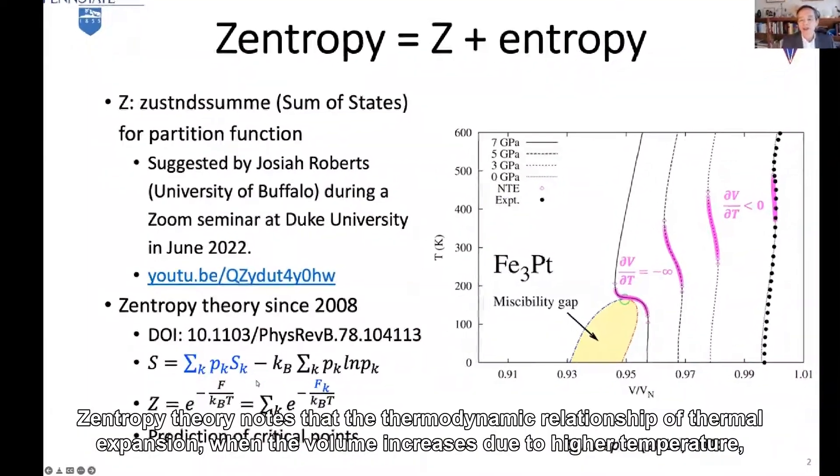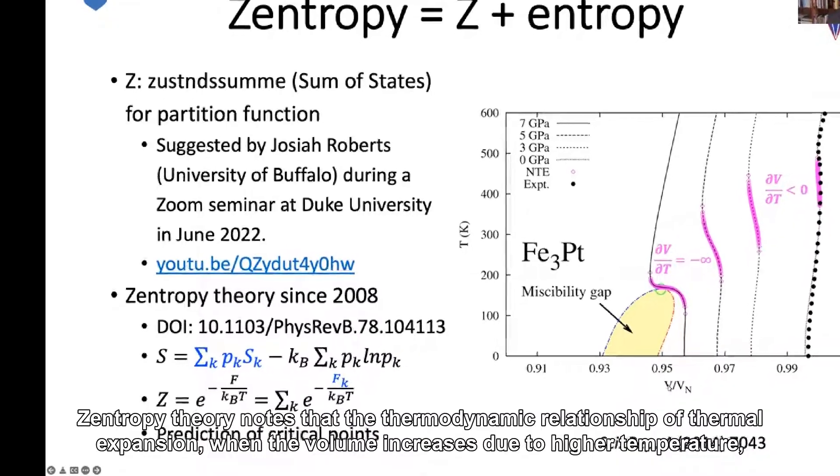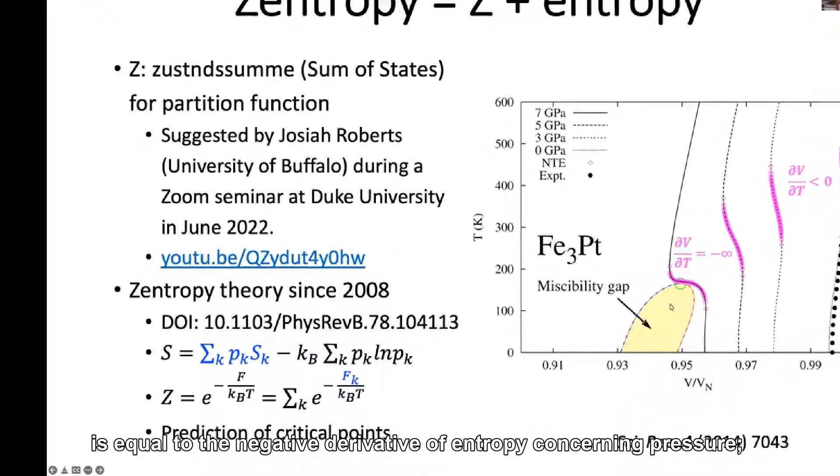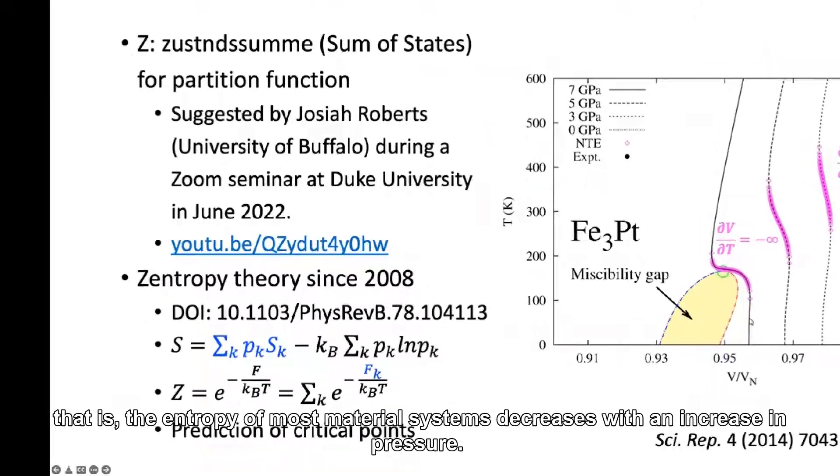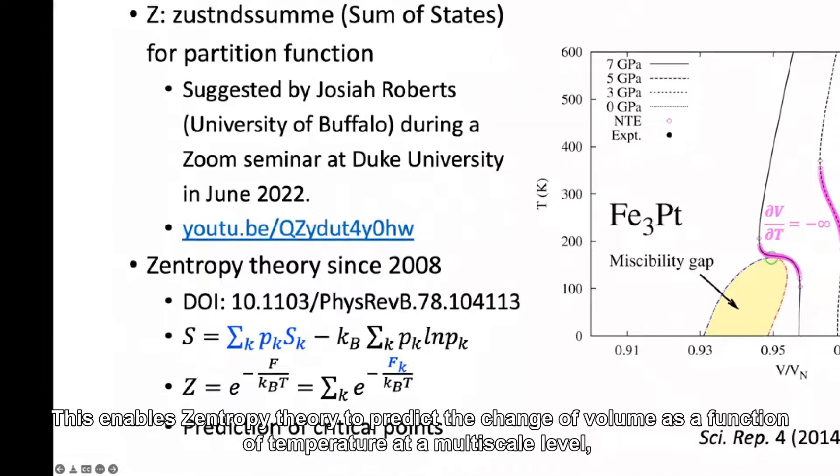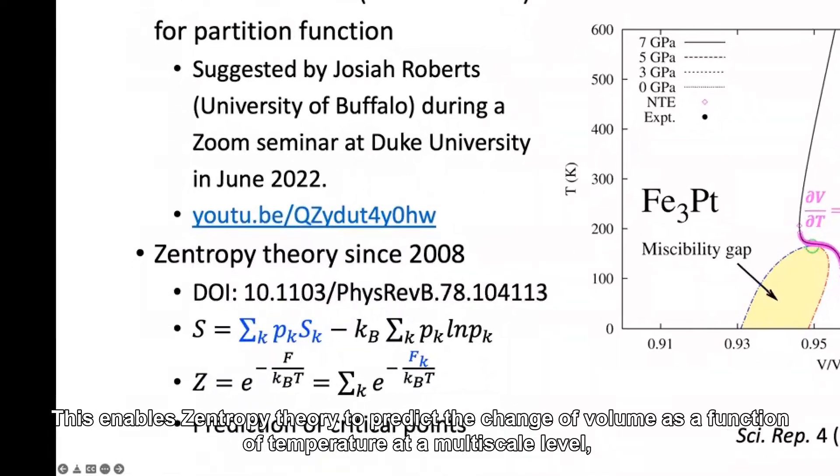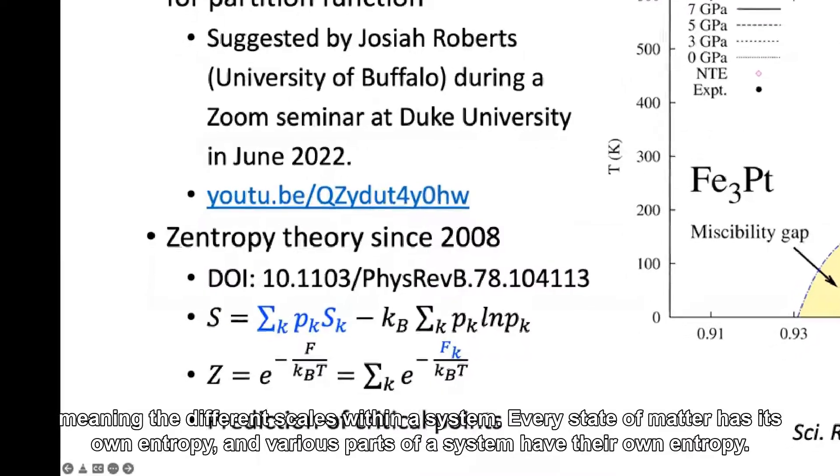Zentropy theory notes that the thermodynamic relationship of thermal expansion, when volume increases due to higher temperature, is equal to the negative derivative of entropy with respect to pressure. That is, the entropy of most material systems decreases with an increase in pressure. This enables Zentropy theory to predict the change of volume as a function of temperature at a multi-scale level, meaning the different scales within a system.